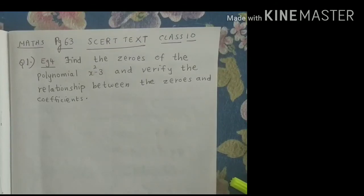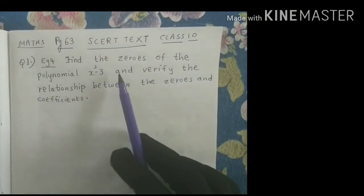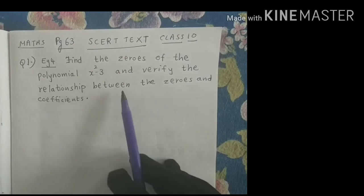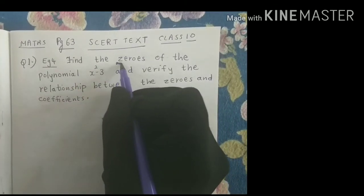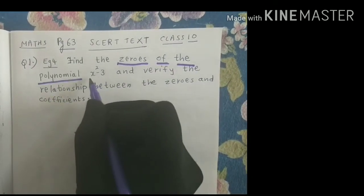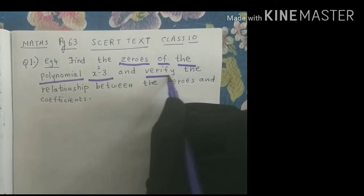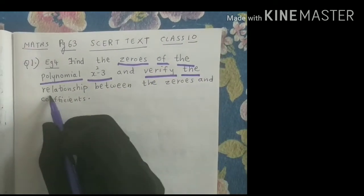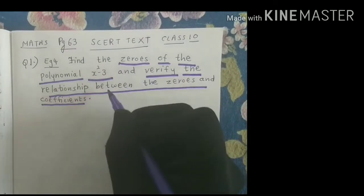In today's video lecture we are going to solve another problem on polynomials. The question is: find the zeros of the polynomial x squared minus 3, and verify the relationship between the zeros and the coefficients. So there are two parts to this question.